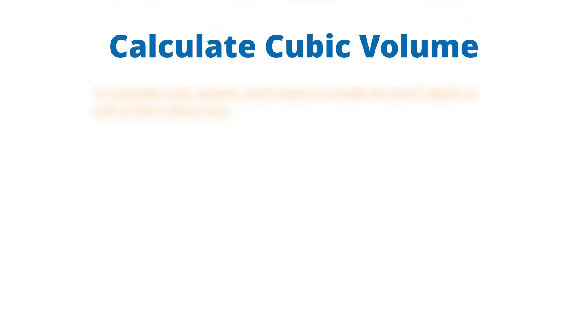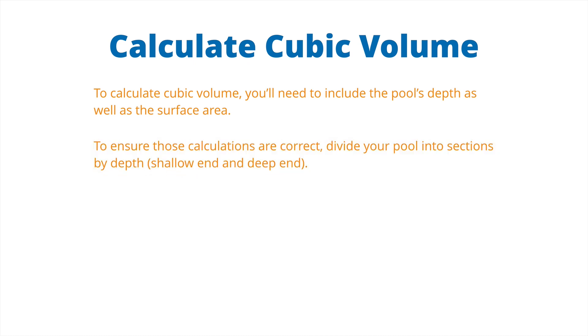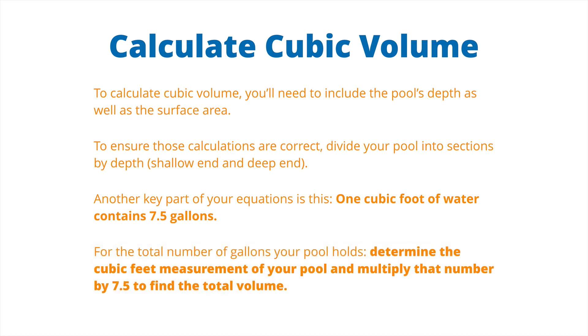Now let's calculate the cubic volume. We're going to need to know this because to calculate the cubic volume, you'll need to include the pool's depth as well as the surface area. To ensure those calculations are correct, divide your pool into sections by depth, whether you have a shallow end or a deep end. If you have an above ground pool with a constant depth, you will not need to divide anything. And another key part of your equation is one cubic foot of water contains 7.5 gallons. So for the total number of gallons your pool holds, determine the cubic feet measurement of your pool, and then multiply that number by 7.5 to get the total volume in gallons.